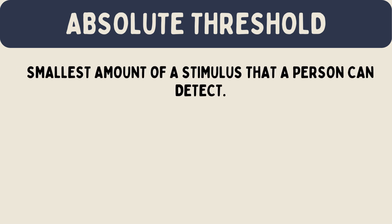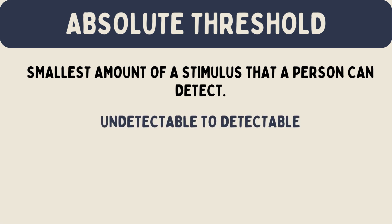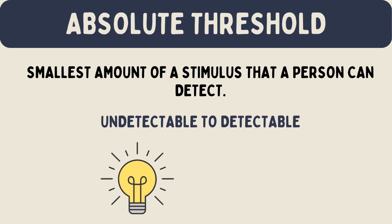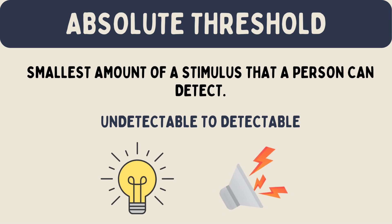In psychology, the absolute threshold is the smallest amount of a stimulus that a person can detect. It's the point where something goes from being undetectable to detectable. For example, it could be the dimmest light a person can see or the quietest sound they can hear.